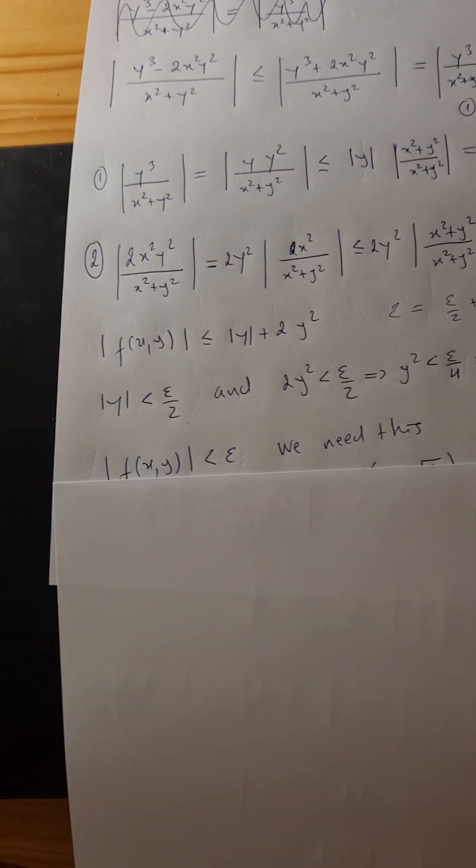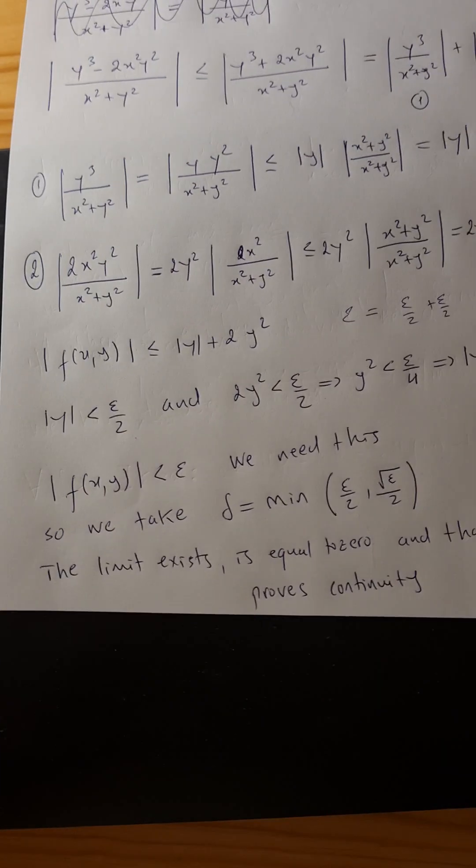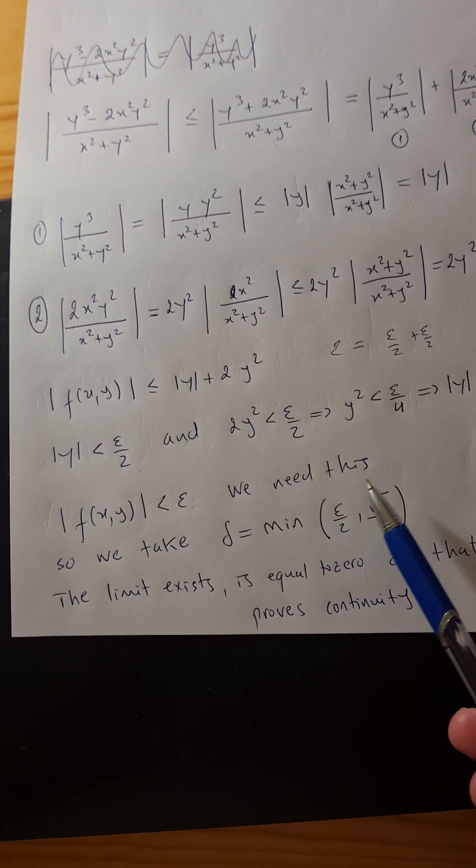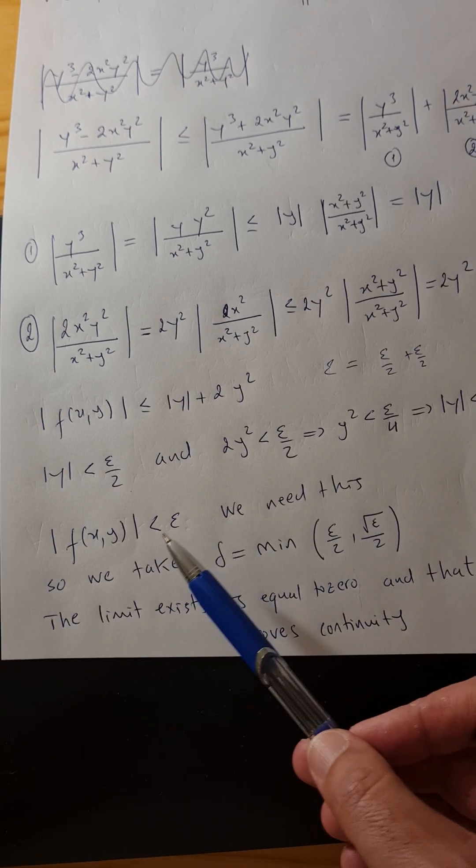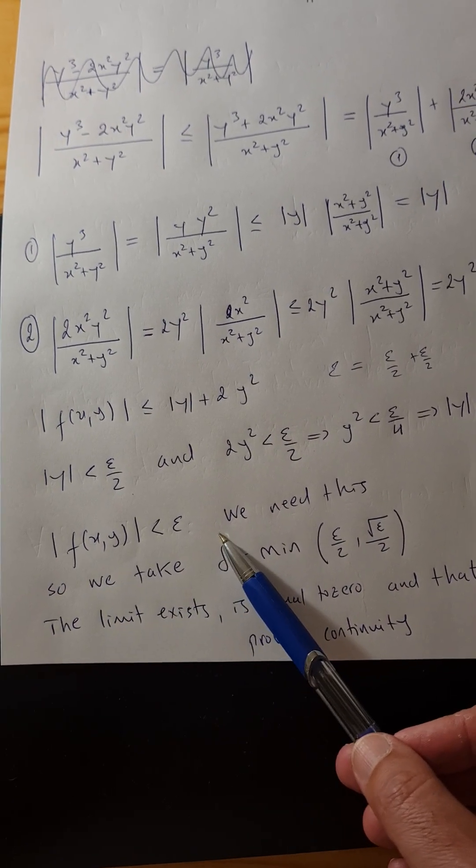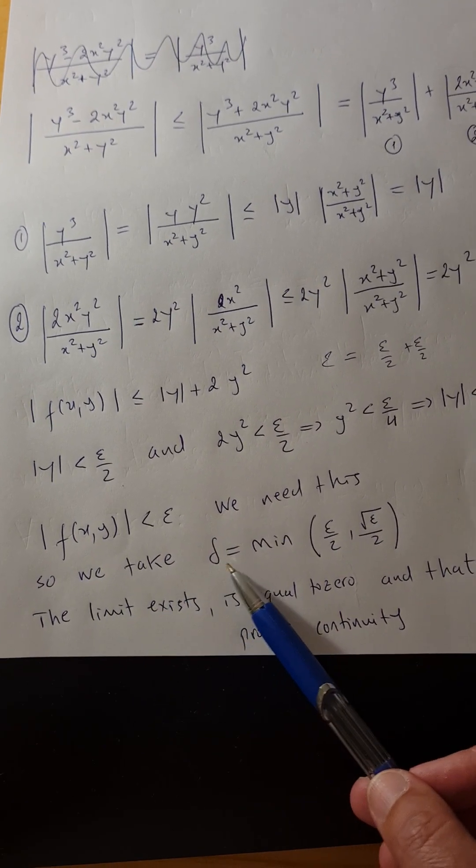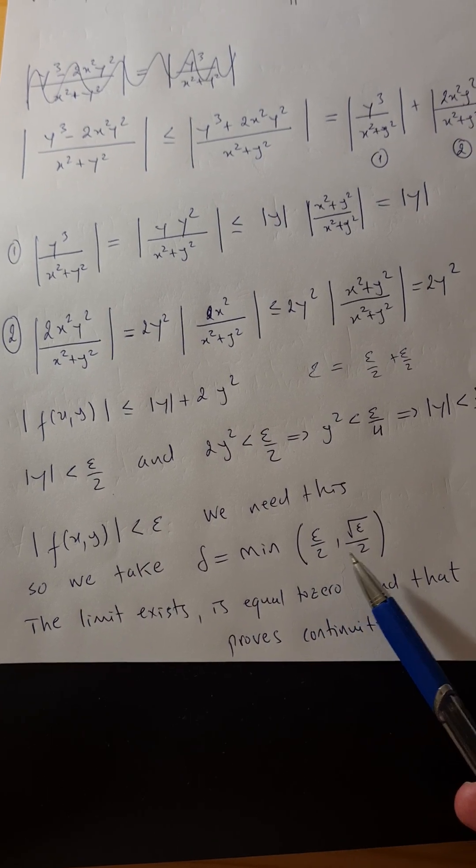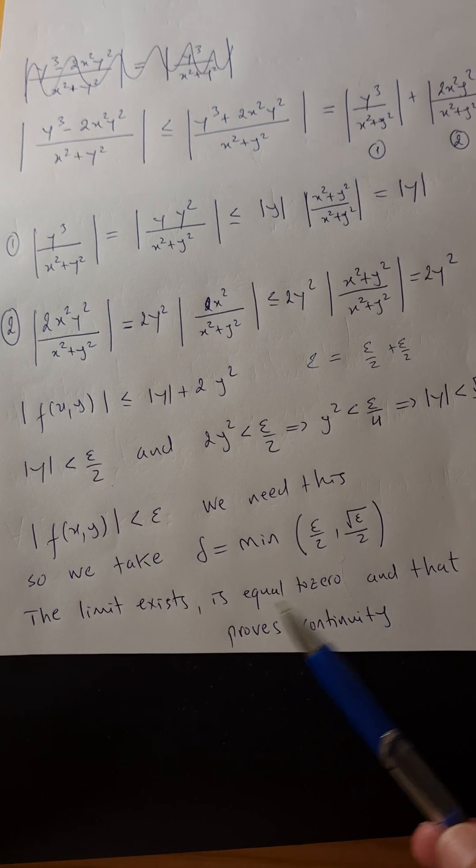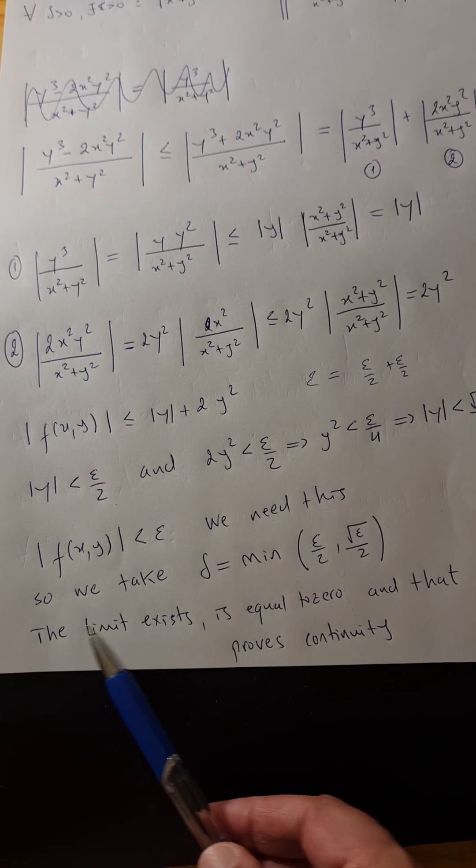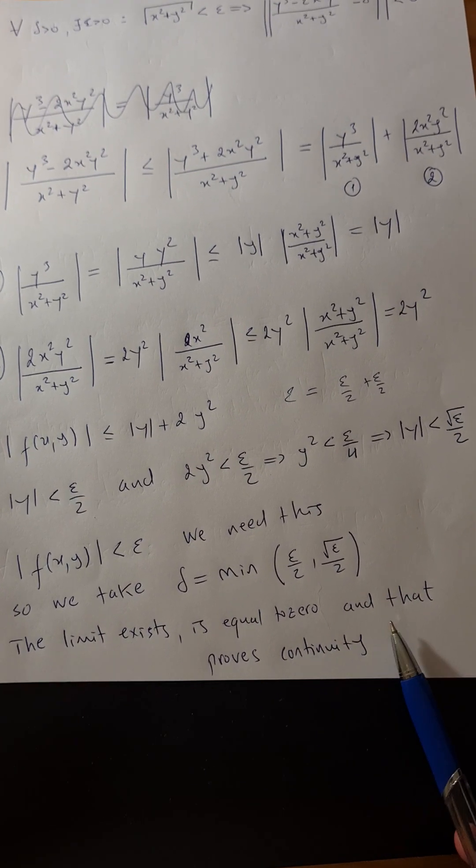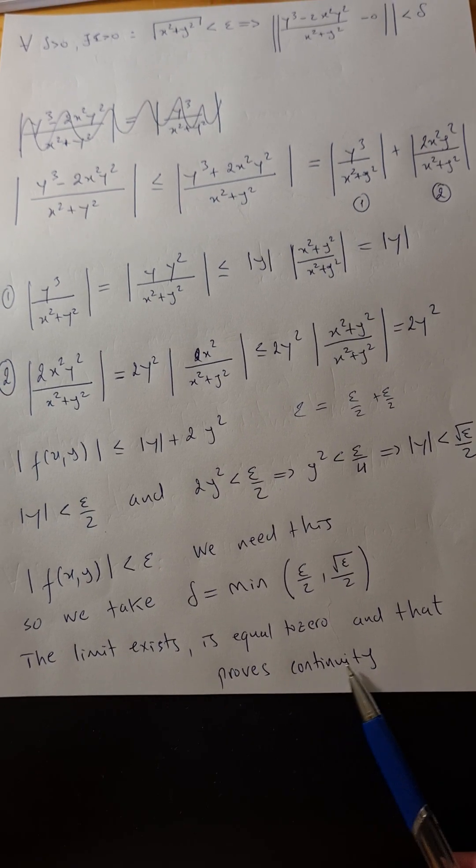So f of x has to be smaller than epsilon. We need this to happen. So we take delta, it will be the minimum of epsilon over 2, square root of epsilon over 2. And that proves that the limit exists, is equal to zero, and that proves continuity.